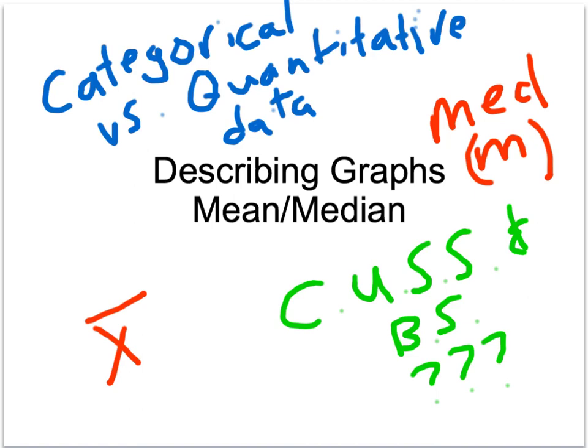Some of the big ideas you need to make sure you're aware of is categorical versus quantitative data, what x-bar mean represents, what a median is and how to calculate it, and what does CUSS BS mean? We get to swear in the AP stats class, that's what it means? Well, not exactly, so hold that thought for a second, and we will explain what that means here.